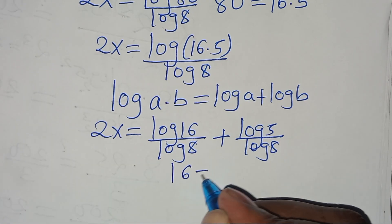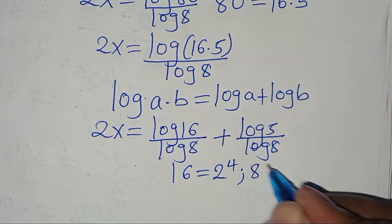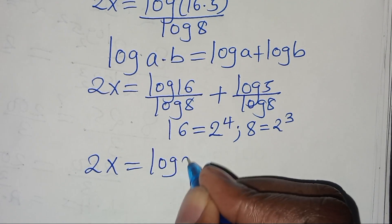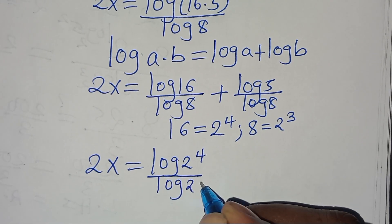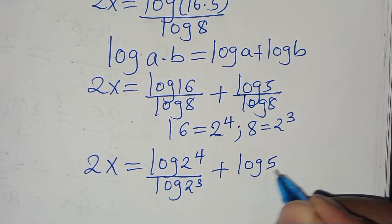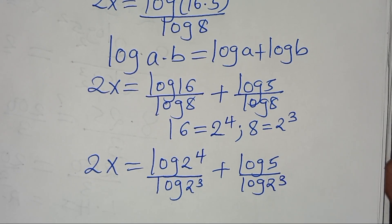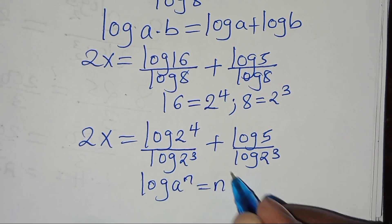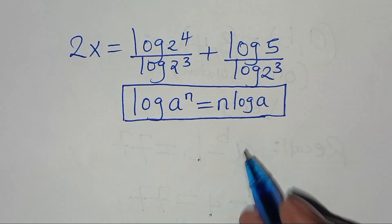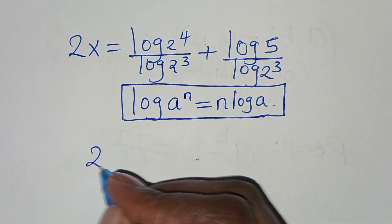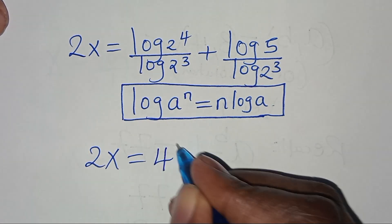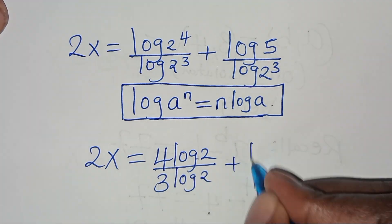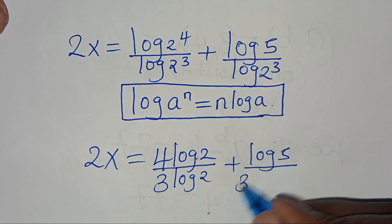We can express 16 as 2 to the power 4 and 8 as 2 to the power 3. Therefore, 2x equals log(2 to the power 4) divided by log(2 to the power 3), plus log 5 divided by log(2 to the power 3). Now log(2 to the power 4) is in the form of log(a to the power n), which equals n log a. Applying this power rule property, log(2^4) becomes 4 log 2 and log(2^3) becomes 3 log 2.